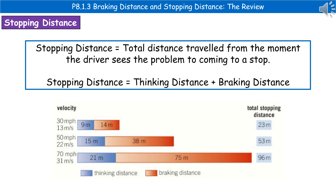The second term we need to know is the stopping distance. The stopping distance is the total distance travelled from the moment the driver sees a problem to coming to a complete stop. In reality, the stopping distance is the thinking distance plus the braking distance. At the bottom there's a section from the Highway Code showing what happens with thinking distance and braking distance.